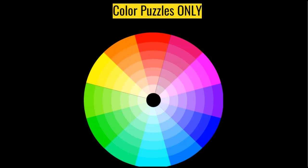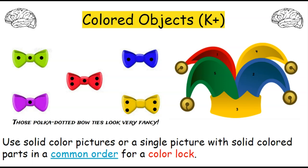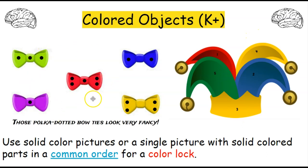The final group is color puzzles only. This is the colored objects puzzle, appropriate for kindergarten and up. It's a mental puzzle so it works for both physical and digital breakouts. You use solid color pictures or a single picture with solid colored parts in a common order for a color lock. Both example puzzles use a number order — one uses a single object with different color parts numbered one through five, and the other uses separate objects with polka dots indicating order. So you go from purple to blue to green to yellow to red.